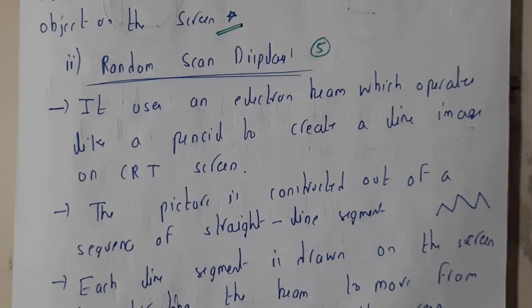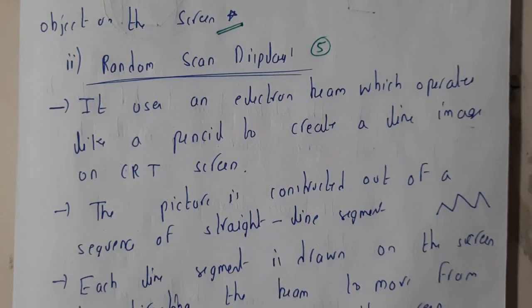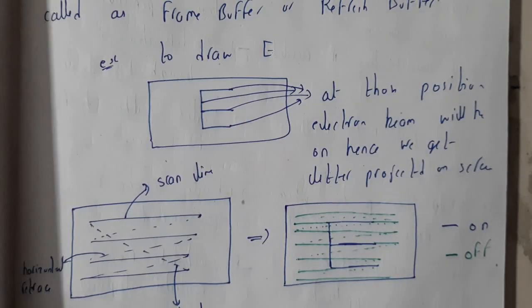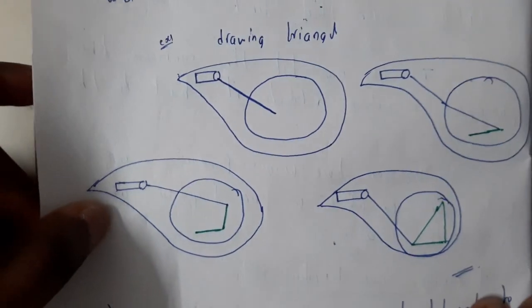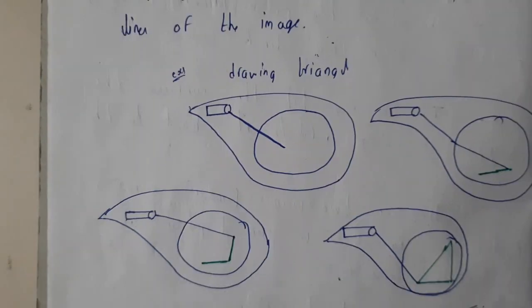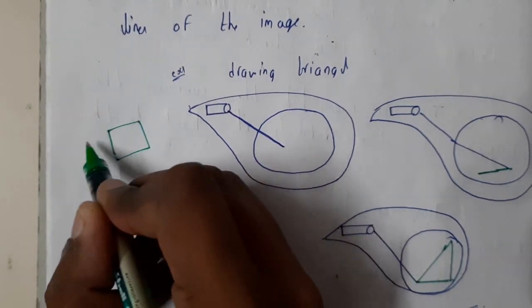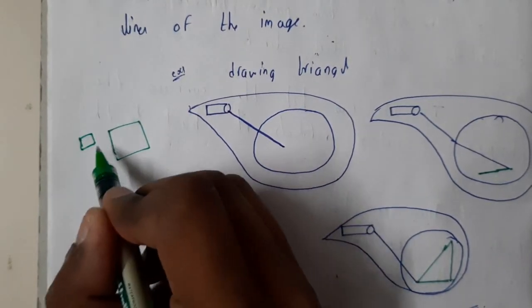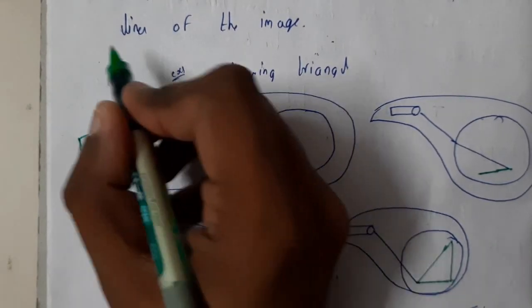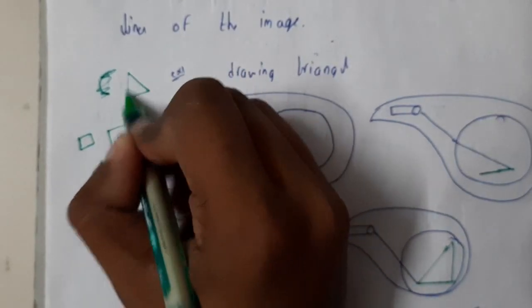Hello guys, we are back with our next tutorial. In this tutorial let us go through random scan. From the name we can say it is nothing but a random scan. So whenever you want to draw a line, this is a small diagram. This is your screen and this is your electron gun. You want to draw a circle, or let us assume a straight line object, you want to draw a triangle.